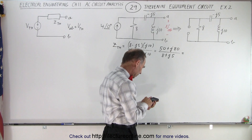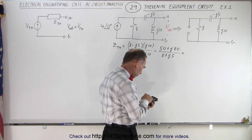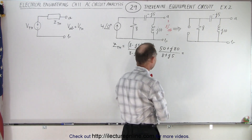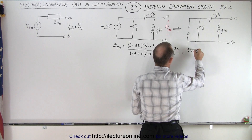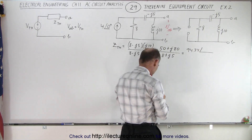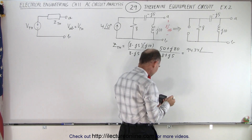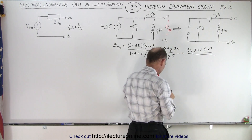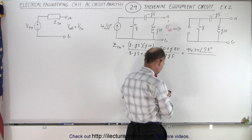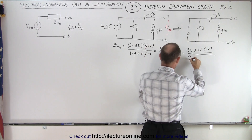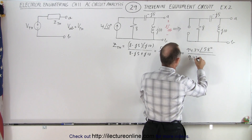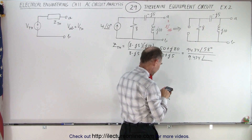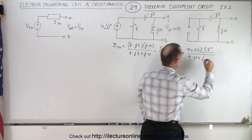So we have 80 squared plus 50 squared, take the square root — that's 94.34. That's 94.34 with a phase angle of inverse tangent of 80 over 50, which is essentially 58 degrees. Divided by, in the denominator we get 64 plus 25, that would be 9.434. And the phase angle is inverse tangent of 5 divided by 8, which is exactly 32 degrees.